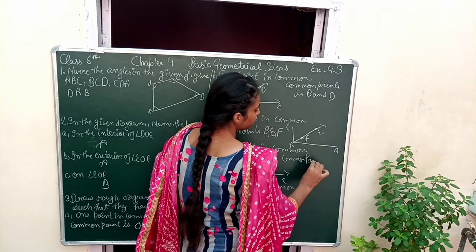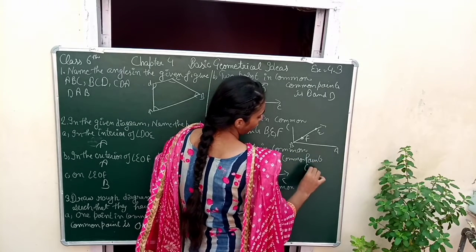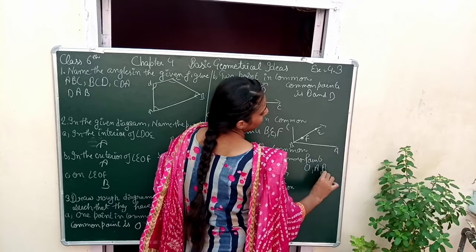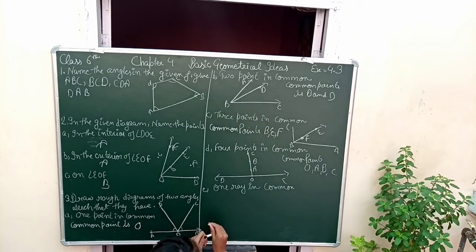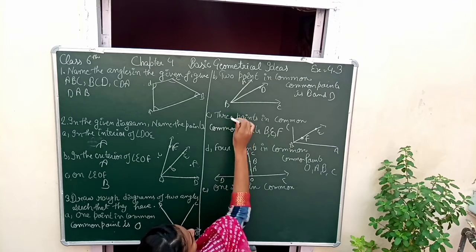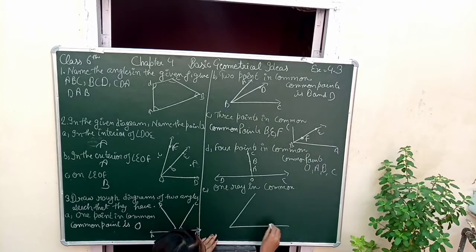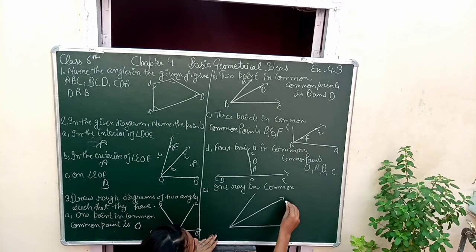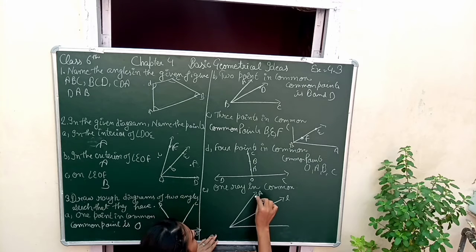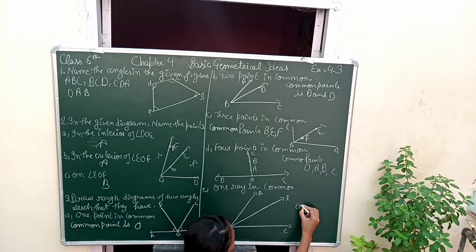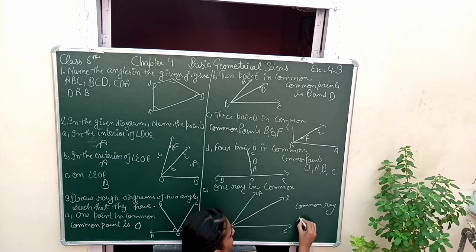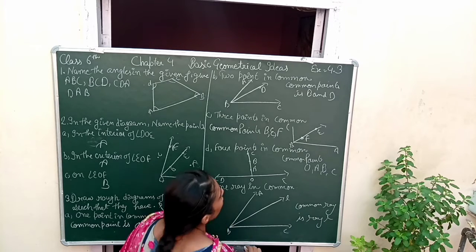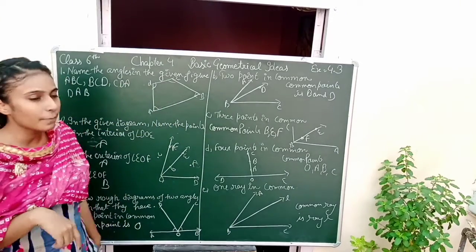Common point O, A, B, C. Okay, next what is one ray in common? Just one ray is common. Like we have made this figure, what is the ray? The common ray is ray L. So students, this is your exercise 4.3 complete.